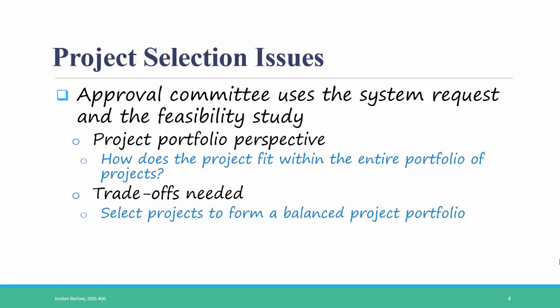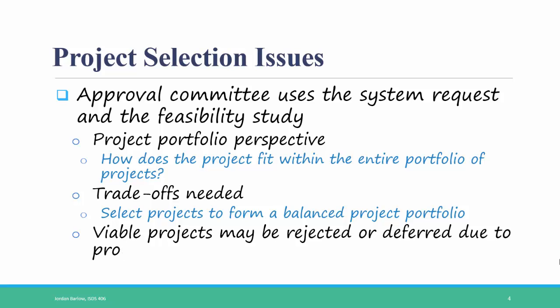For example, organizations will want to have a balance of large and small projects, expensive and less expensive projects, high-risk and low-risk projects, and so forth. If a lot of high-risk projects are currently being undertaken, a new proposal for a high-risk project will likely be deferred or rejected. The same could go for any of the characteristics listed. Any viable project might be rejected or deferred due to project portfolio issues.